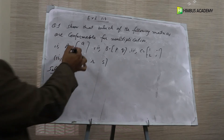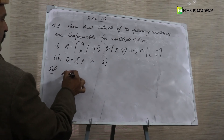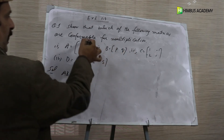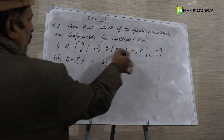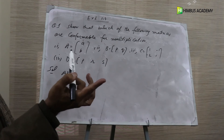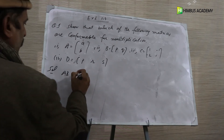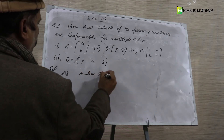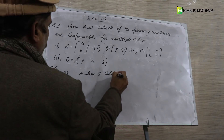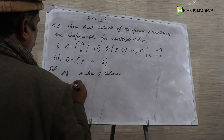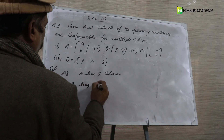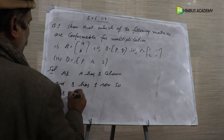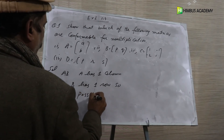So, we can see that A is our first matrix and B is our second matrix. A has one column and B has one row, so the number of columns and rows are equal. Therefore, AB is possible.